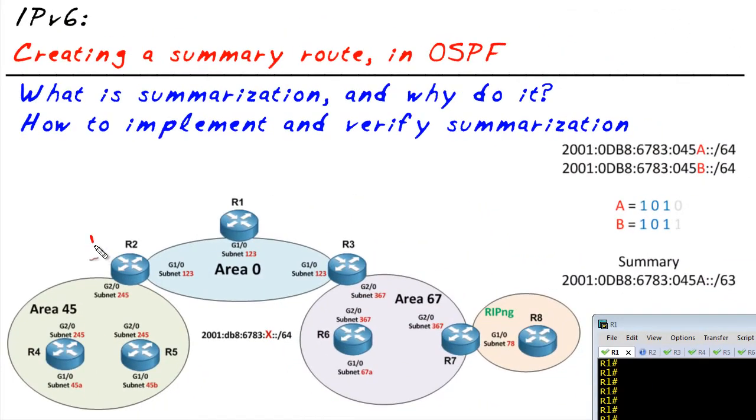Then we'd tell R2, because he's an area border router, to advertise the summary instead of the individual detailed routes. So R2 is going to hold back information regarding those two /64s and advertise the appropriate summary. My objective in this micro nugget wasn't to get into the bits of actually creating the summary, but I would like to show you my work.